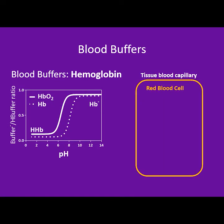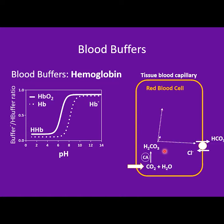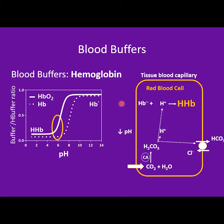In tissue blood capillaries, carbon dioxide is high because surrounding cells are performing aerobic glycolysis. Carbon dioxide enters the red blood cell and reacts with intracellular carbonic anhydrase to form carbonic acid, which splits to form bicarbonate and protons. Bicarbonate leaves the cell through a transporter, and protons acidify the cell, shifting pH from 7.4 toward an acidic pH. Both oxyhemoglobin and deoxyhemoglobin will prefer the acidic form — deoxyhemoglobin reacts first because its pKa is higher, then oxyhemoglobin also reacts to form its protonated form, buffering pH.